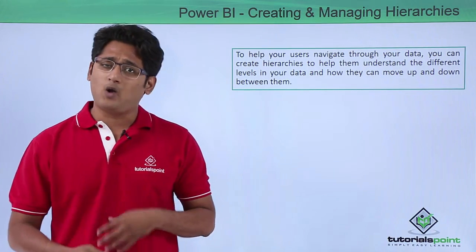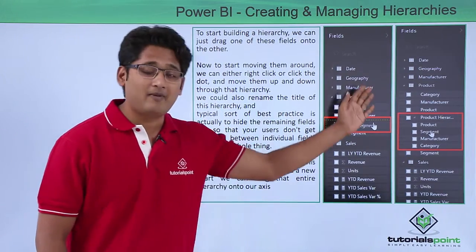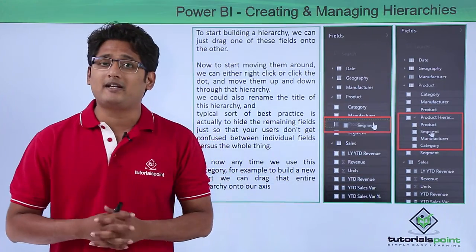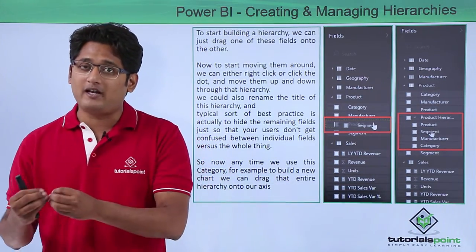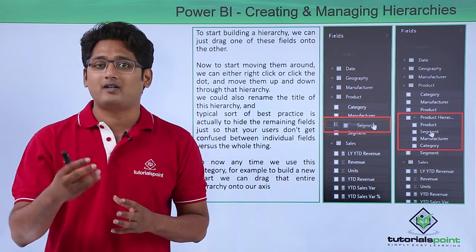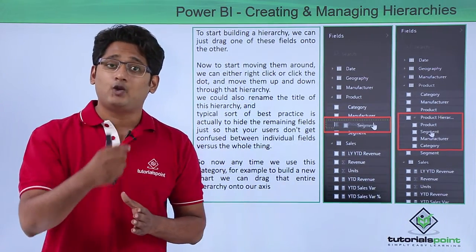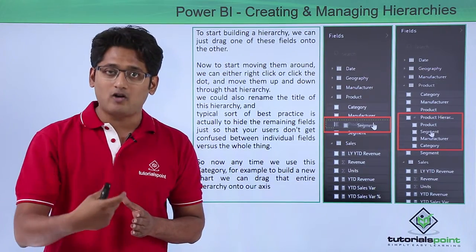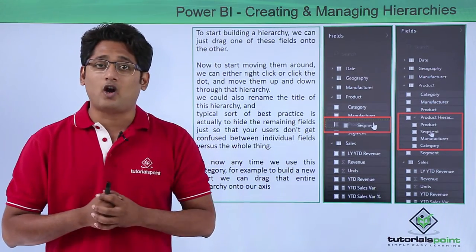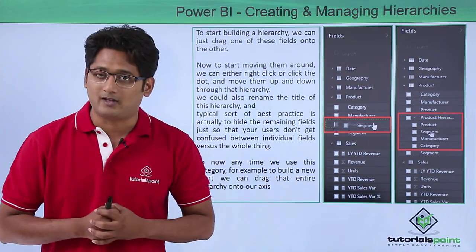So how do we create a hierarchy? On the extreme left side of your screen you will find the Fields pane. In order to create a hierarchy you simply have to pick one field and drop it onto another — the moment you drop it onto another, a hierarchy will be created. Once you have created your hierarchy, the order of the sequence can also be changed by right-clicking on any column and asking it to move up or move down.